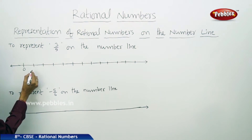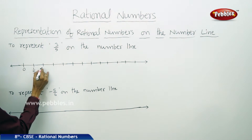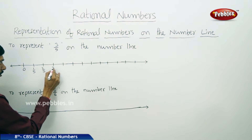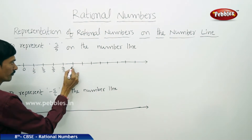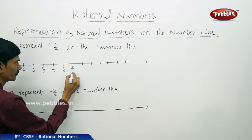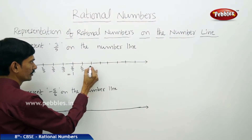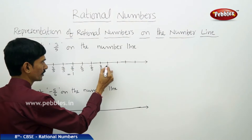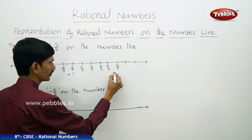The first part is represented by 1 by 5, the second part by 2 by 5, then 3 by 5, 4 by 5, and 5 by 5 which equals 1. The next parts are 6 by 5, 7 by 5, 8 by 5, 9 by 5, and 10 by 5 which equals 2.